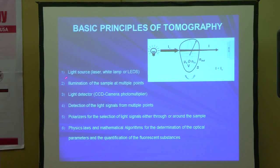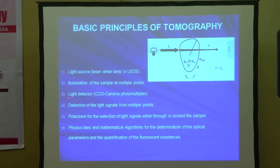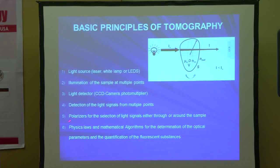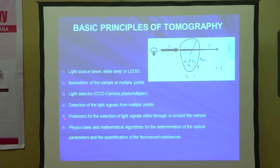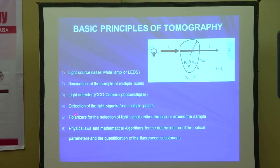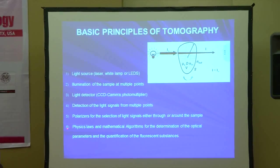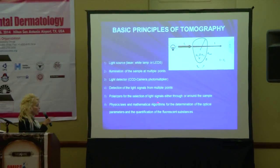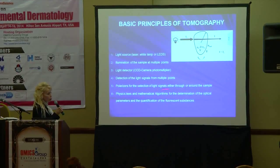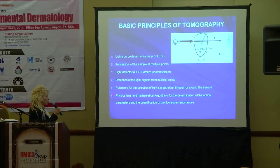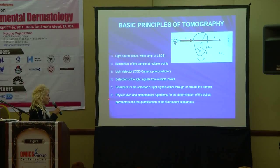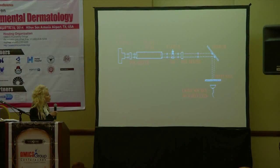The basic principles are light sources or white lamps, the illumination, a light detector with a CCD camera, detection of light signals from multiple parts, two polarizers — the perpendicular one and the horizontal one — which are used to delineate the borders of the lesion. All of these are based on physics laws and mathematical algorithms developed at the Institute of Laser and Electronic Structures of the University Hospital of Crete.